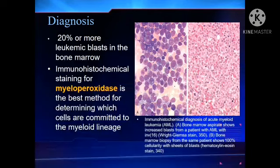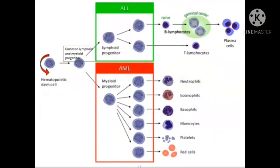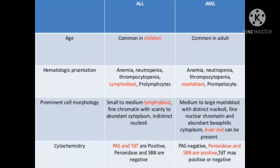For diagnosis, you need 20% or more leukemic blasts in the bone marrow and a positive myeloperoxidase stain, which gives dark blue color to the granules. To summarize: lymphoid progenitor gives rise to ALL and myeloid progenitor gives rise to AML. Lymphoblast is smaller with scant cytoplasm and no granules, whereas myeloblast has moderate cytoplasm, granules, and the characteristic Auer rod.